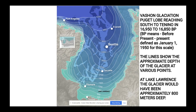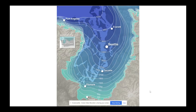This occurred during a cold period around the world known as the last glacial period. The Vachon glaciation is an extension of the Fraser glaciation in which the Cordilleran ice sheet advanced south of the present-day Canada-United States border into the Puget Sound region. This southern part of the Cordilleran ice sheet is called the Puget Lobe.